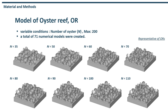Next is the oyster reef model. The oyster model shown in the figure is a representative model used for flow analysis. Here, N is the number of oyster shells. We designed the model by varying the number of oyster shells and used up to 200 oyster shells. A total of 71 oyster models were used for flow analysis.